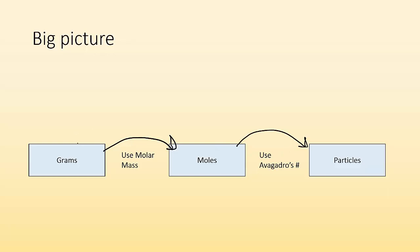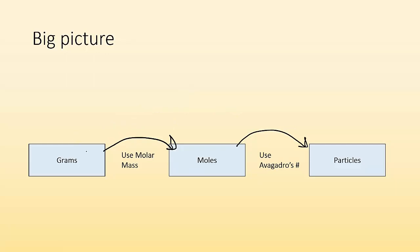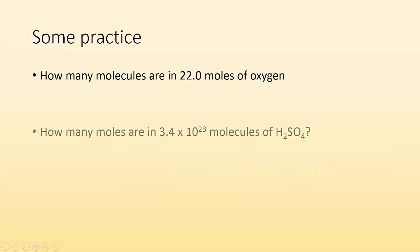Big picture: if we want to go from grams to moles, we use the molar mass. If we want to go from moles to particles, we use Avogadro's number. If we want to go from grams all the way to particles, we can't do that in one step — we have to do multiple steps.